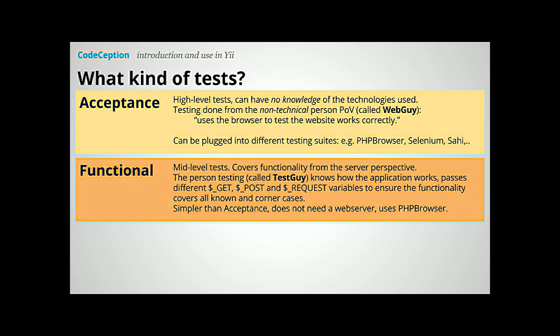The second level — the middle level — is functional tests. These are tests from the point of view of the so-called test guy in Codeception. The test guy knows how the application works from the server perspective. These tests are browserless, so when we write a test we are writing direct queries to the server, we read the response, and we decide whether it is okay or not. If you have headers, cookies, or sessions that need to be present and readable, that's not the situation for functional tests — in that case you might need acceptance tests instead.